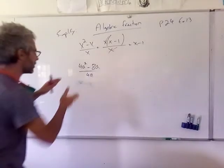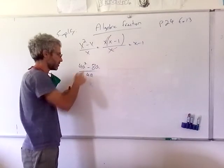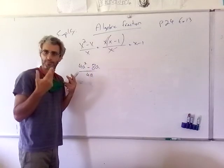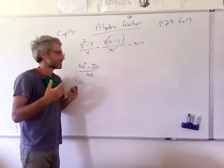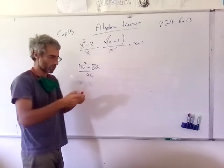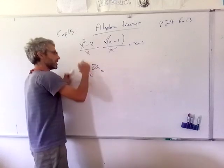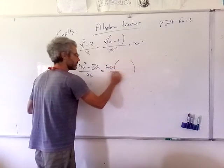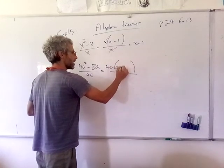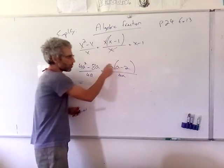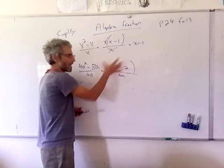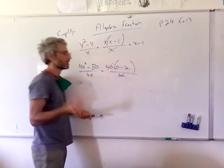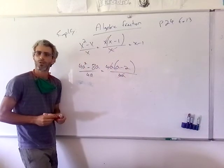Because we can't cross-cancel with a minus, we want to turn it into multiplication. So we factorize: take 4a out, giving 4a times (a minus 2). Now that it's a product, we can cross-cancel, and we're left with a minus 2.